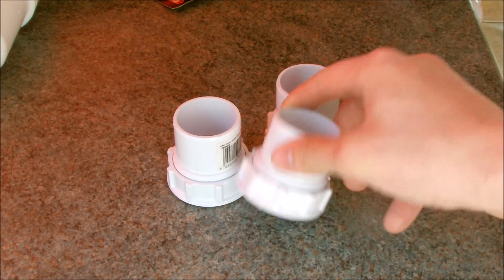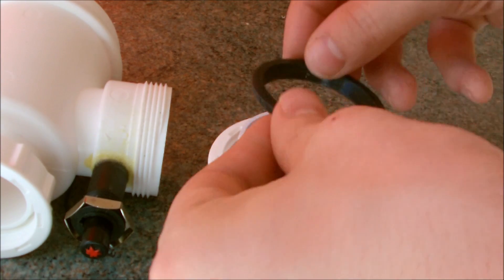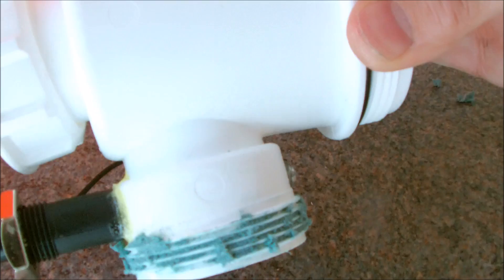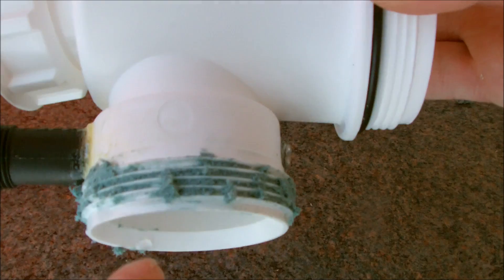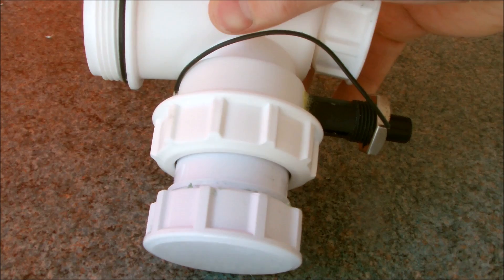Once that was done I took one of my PVC end caps and attached it underneath the igniter. I also decided to line the threads with PVC cement to create a good seal before I screwed them back on.